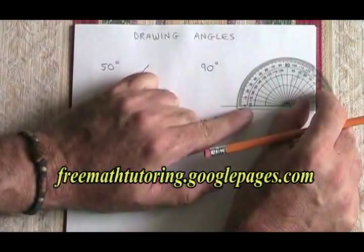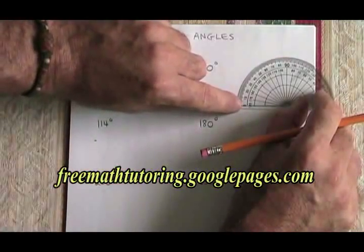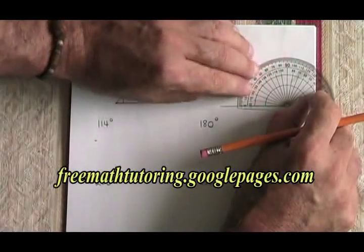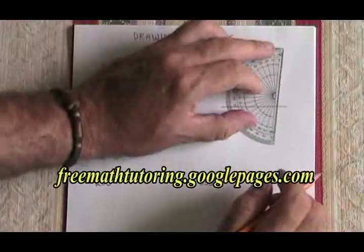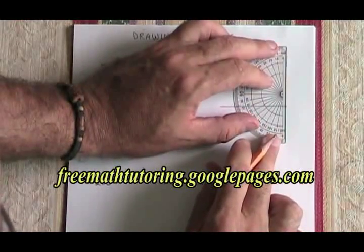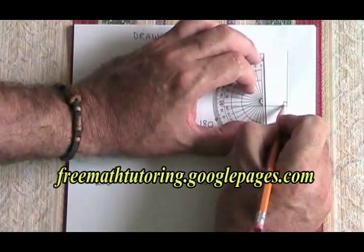Because I'm on the left side of the protractor and I know I have to count up from zero, this time I need to use the outer set of numbers. I follow those numbers until I get to 90 and put a dot, and then I draw a line between that dot and the vertex I started from. I have created a 90 degree angle.